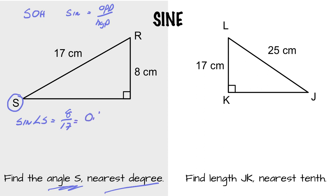So sine angle S equals 8 compared to 17, which is 0.4706. Reverse the ratio to give you the angle.